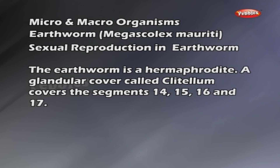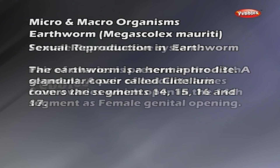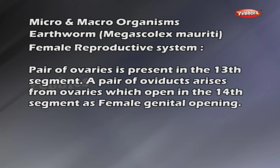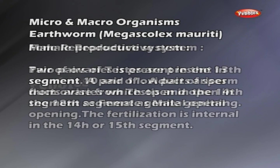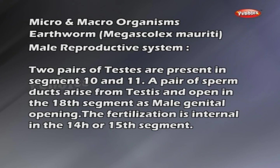Sexual reproduction in earthworm: the earthworm is a hermaphrodite. A glandular cover called the clitellum covers segments 14, 15, 16 and 17. Female reproductive system: a pair of ovaries is present in the 13th segment. A pair of oviducts arises from the ovaries and opens in the 14th segment as female genital openings. Male reproductive system: two pairs of testes are present in segments 10 and 11. A pair of sperm ducts arise from the testes and open in the 18th segment as the male genital opening.